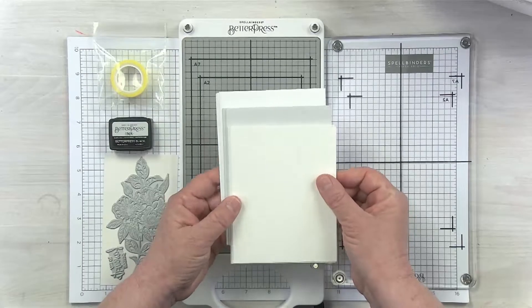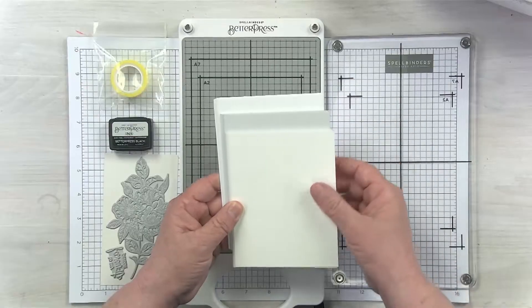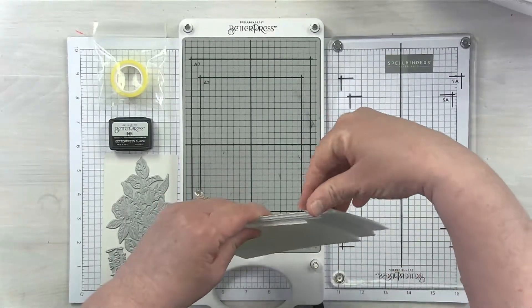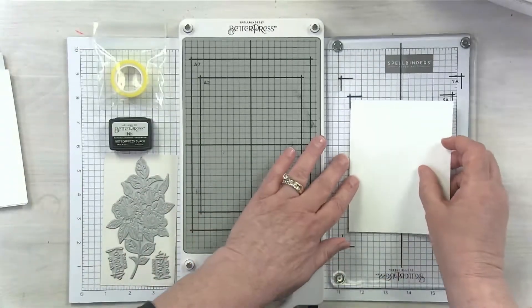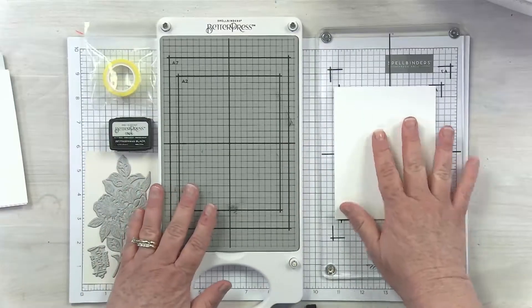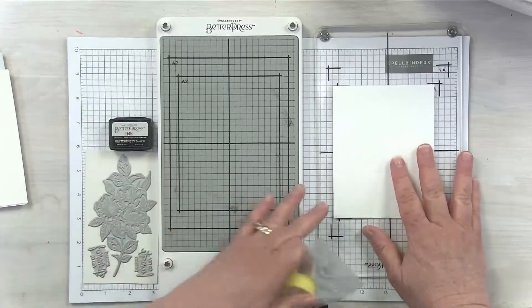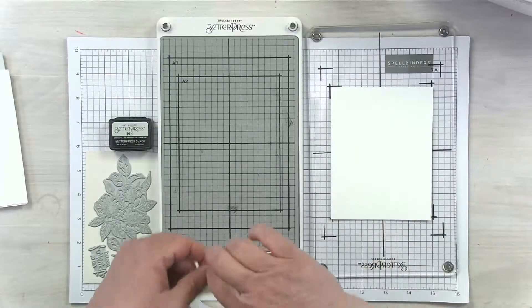By varieties, I mean we have bisque panels, pebble panels, and porcelain panels, which would be closest to regular white. I'm going to grab one of those. This is the porcelain panel. Before I start inking or placing my Better Press plate on my magnetic insert, I'm going to tape this cotton card panel to my platen.